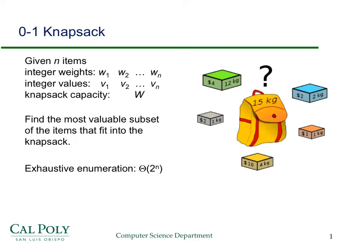One way for the thief to solve this problem is to look at every subset of the items and see which subset has the most value. Unfortunately, that's an exhaustive search approach and it's going to involve looking at 2^N different subsets, which will take a very long time for any large N. So we need to find a better way for the thief to determine which items to take in order to maximize their value.